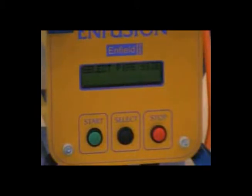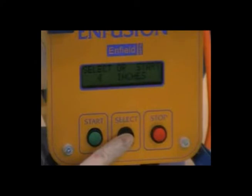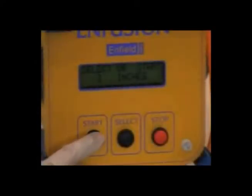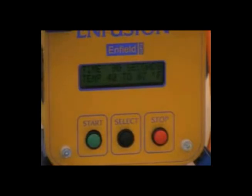Follow the instructions on the display to select pipe size. Using the select button, choose the size of pipe you are joining. When the correct pipe size is displayed, press the start button and the N-Fusion control unit will display the temperature and the welding time.